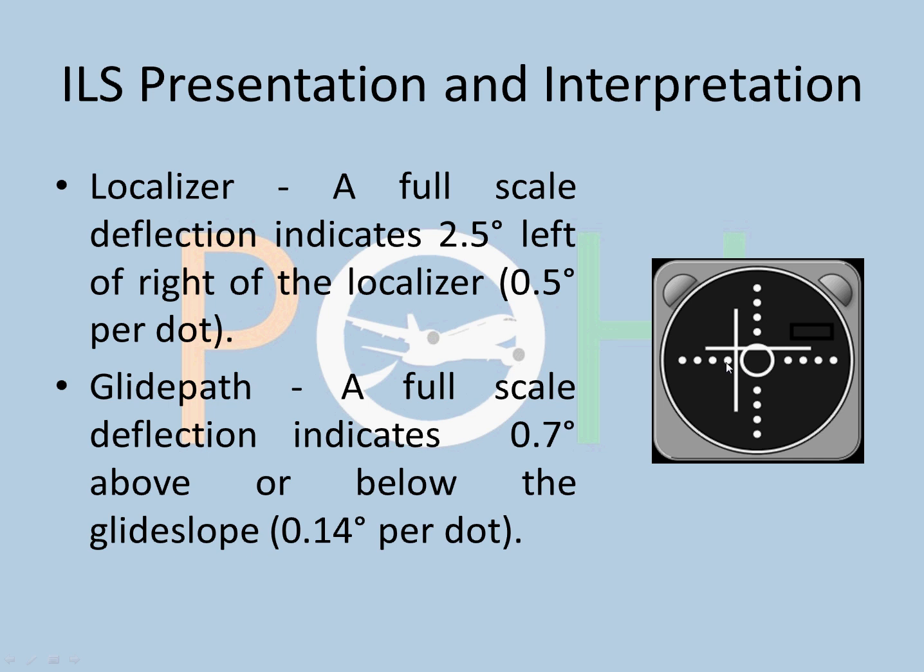Glide path: a full scale deflection indicates 0.7 degrees. 0.7 meaning glide slope, if it is fully up, you are 0.7 degrees off. If you are on a 3 degree glide slope and the glide slope is fully up, you are off by 2.3 degrees. It's not a very good situation to be so high.